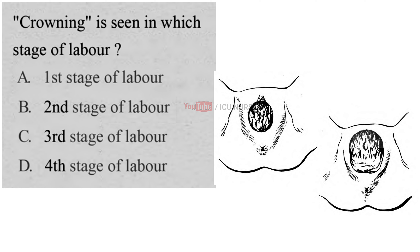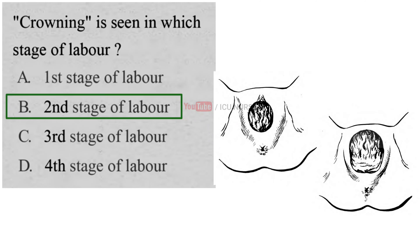Crowning is seen in which stage of labour? A. First stage, B. Second stage, C. Third stage, D. Fourth stage. And the correct answer is B. Second stage of labour. Crowning is when you see the top of your baby's head through the opening of your vagina. This happens during the second stage of labour when you push and deliver your newborn. Once your baby crowns, you push out the rest of their body.